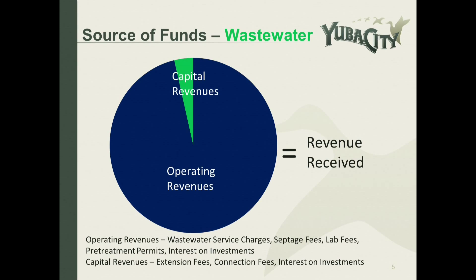For wastewater, it's very similar, although you can see the capital revenues are much smaller. The operating revenues are the wastewater service charges, septage fees, lab fees, pretreatment permits, and interest on investments. The capital revenues are extension fees, connection fees, and interest on investments.